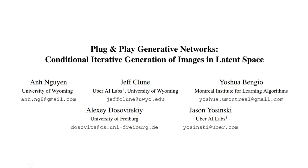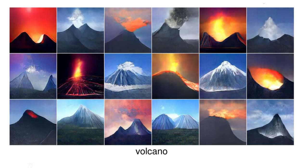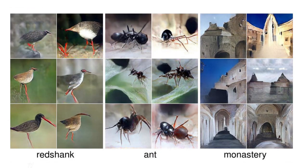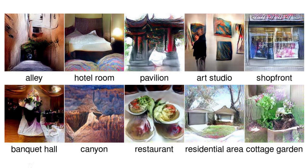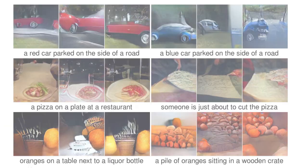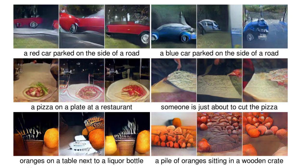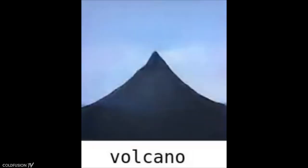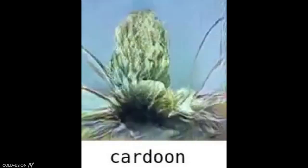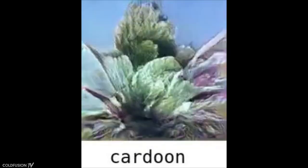Number one: creating a scene from scratch. A team of computer scientists from institutions including the University of Wyoming and Uber's AI department have created what they're calling 'plug and play generative networks.' This system is able to generate photorealistic images from a selection of a thousand categories. Some results look a little weird still, but it's fascinating to see the network figure out how to create a scene from scratch. Each frame in the video is a different iterative step toward the goal image, and it actually looks beautiful to watch.